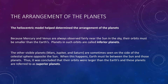Copernicus realized that because Mercury and Venus are always observed fairly near the Sun in the sky, their orbits must be smaller than Earth's. Planets in such orbits are called inferior planets. The other visible planets — Mars, Jupiter, and Saturn — are sometimes seen on the side of the celestial sphere opposite to the Sun. When this happens, Earth must lie between the Sun and these planets. Copernicus concluded that the orbits of Mars, Jupiter, and Saturn must be larger than Earth's orbit, so these planets are called superior planets.